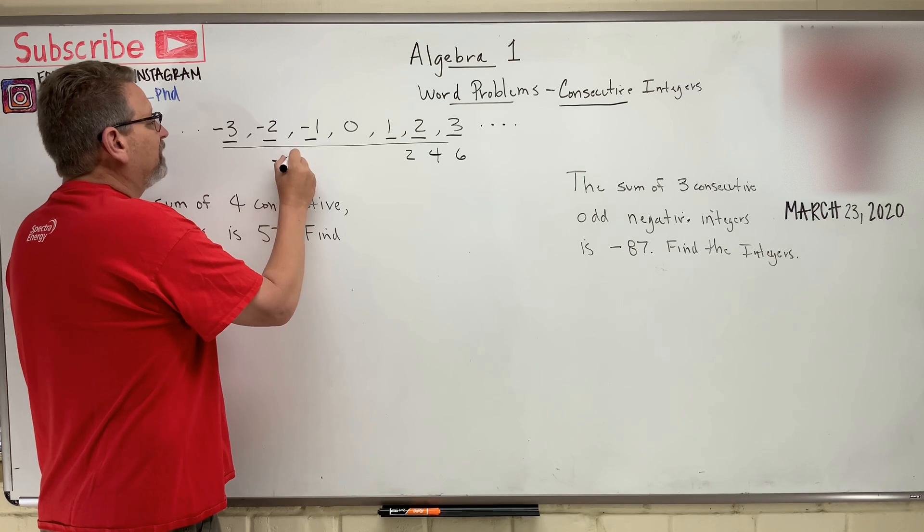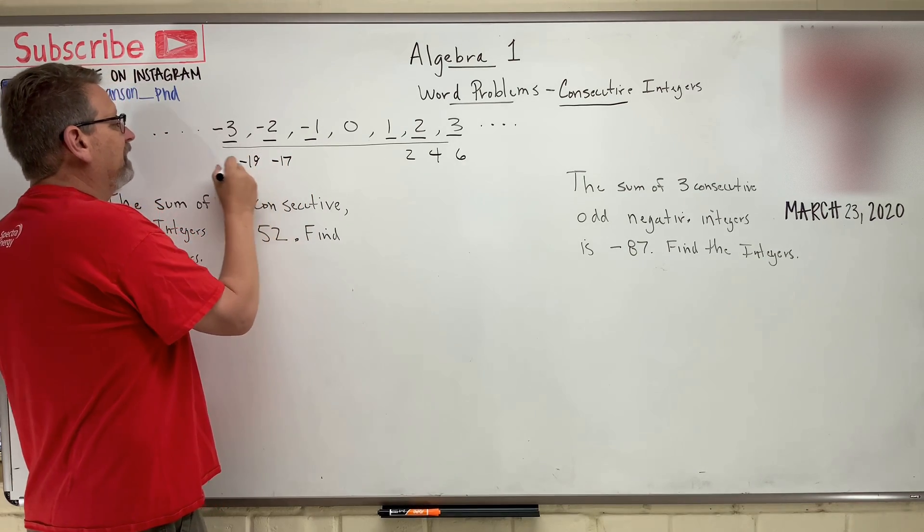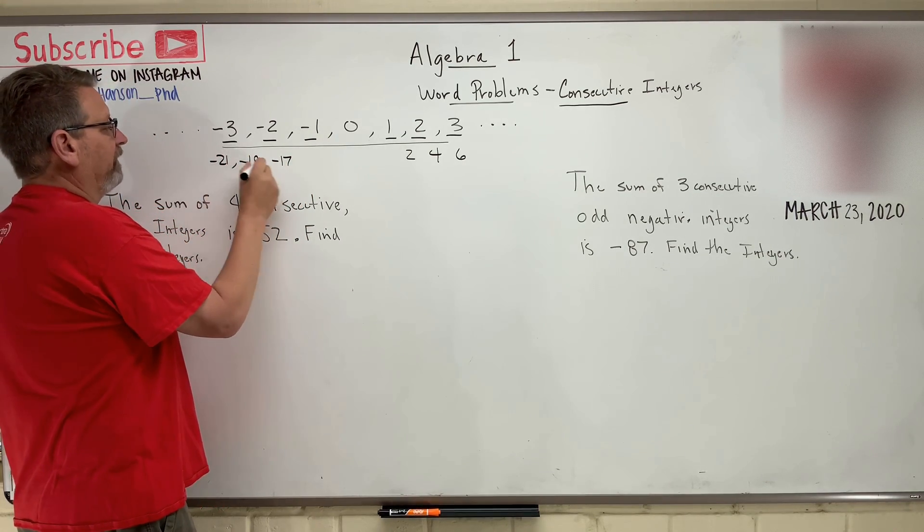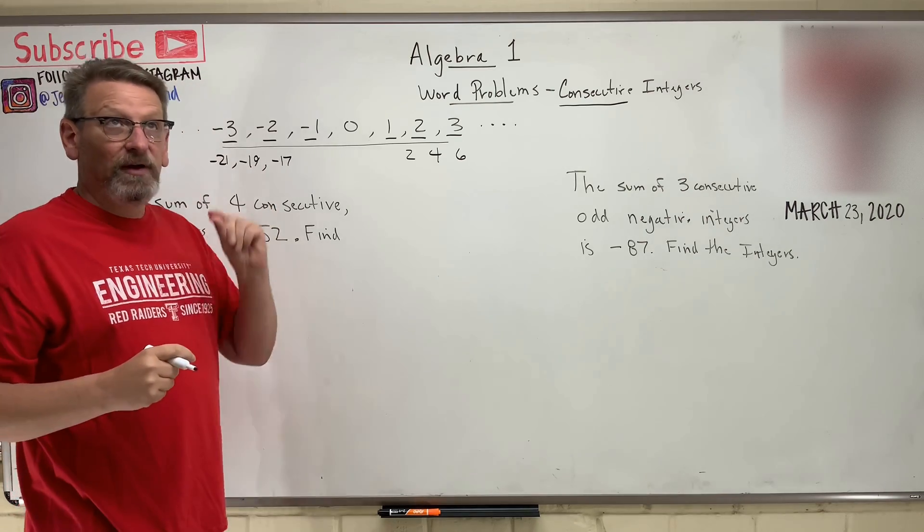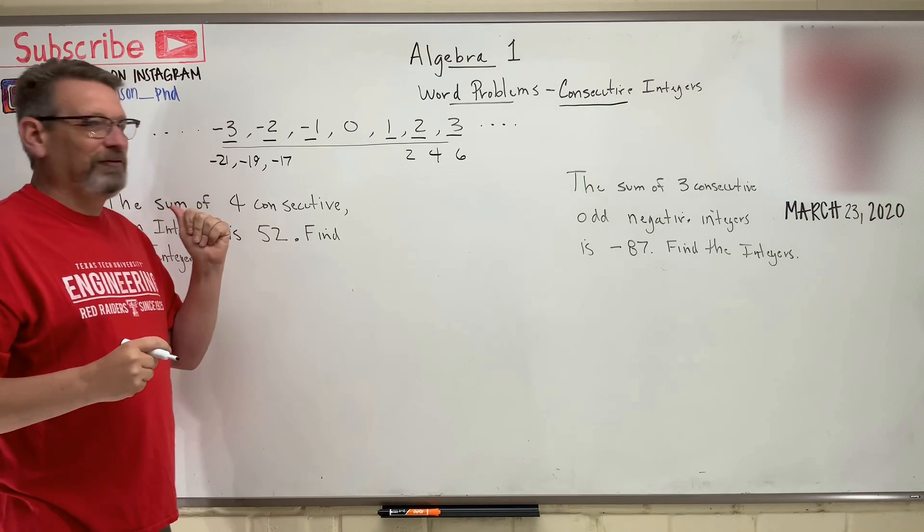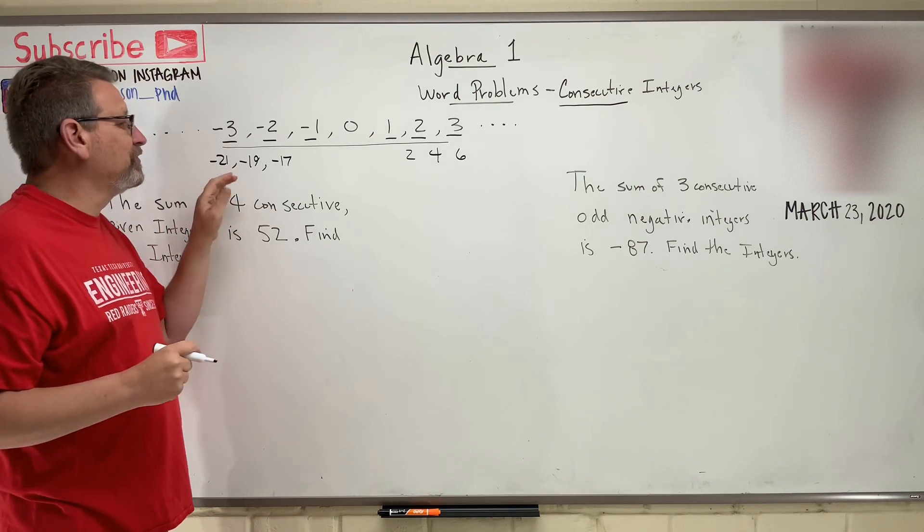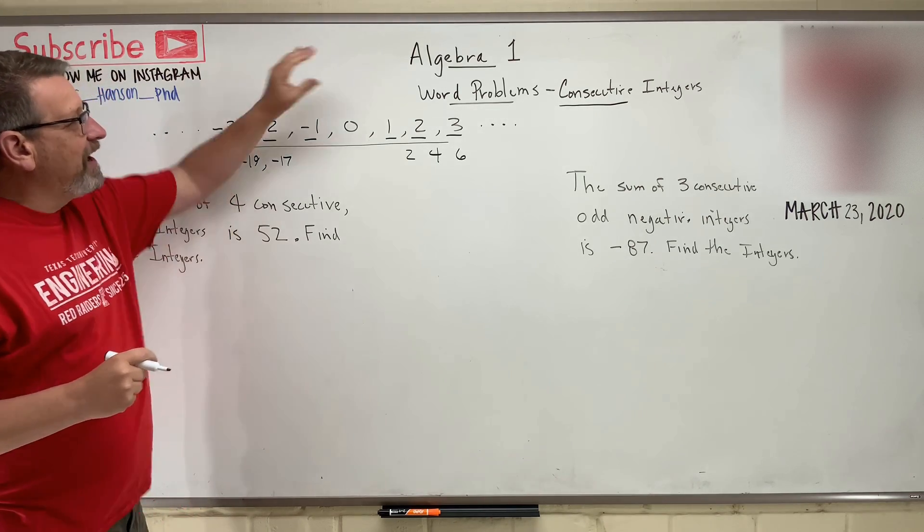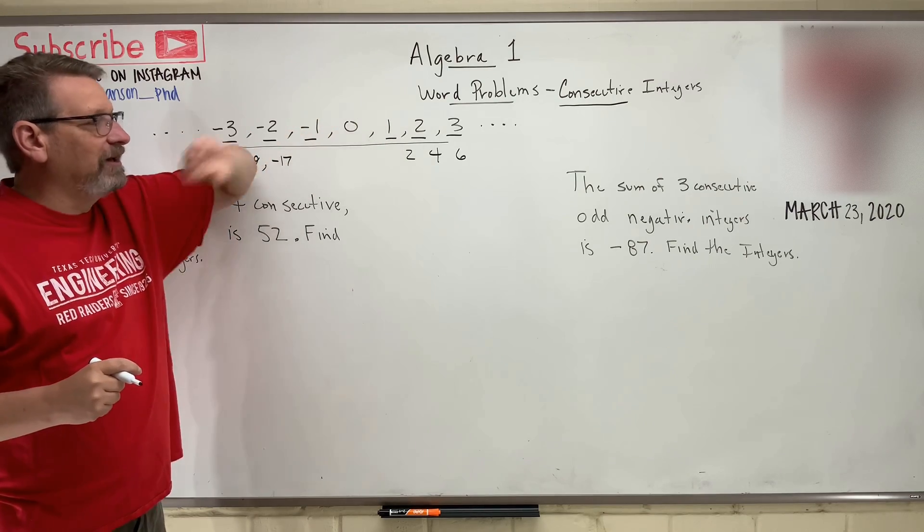Negative 17, negative 19, negative 21, right? Those are three consecutive negative odd integers. That's a lot of constraints on our integers there, isn't it? So how can you work word problems with consecutive integers?